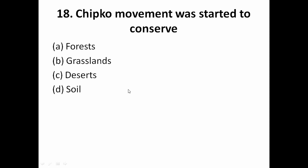The Chipko movement was started to conserve: A — forest, B — grassland, C — desert, D — soil. The Chipko movement is a forest conservation movement. The correct answer is A — forest.